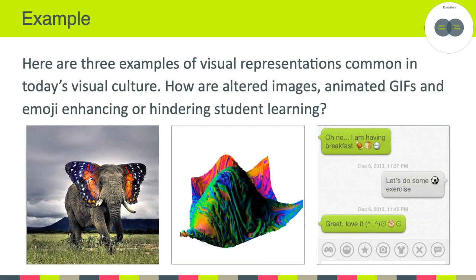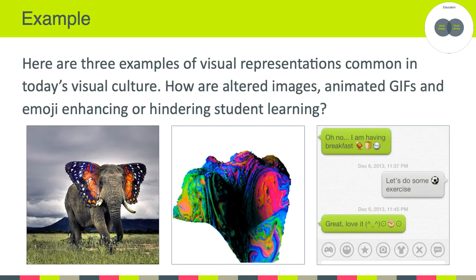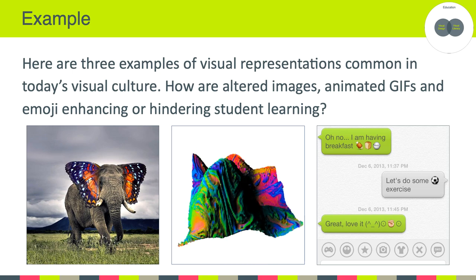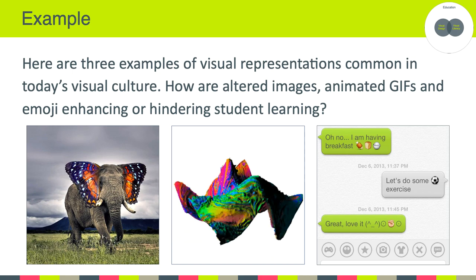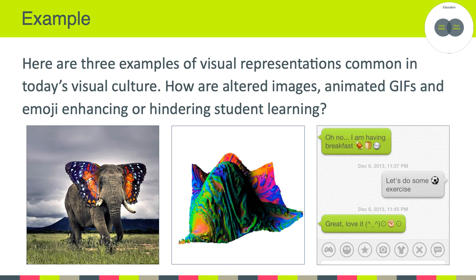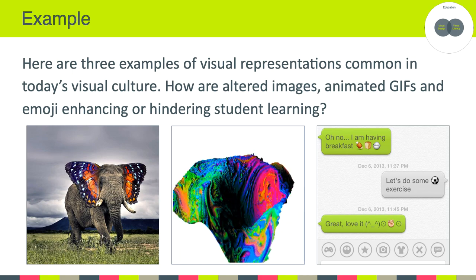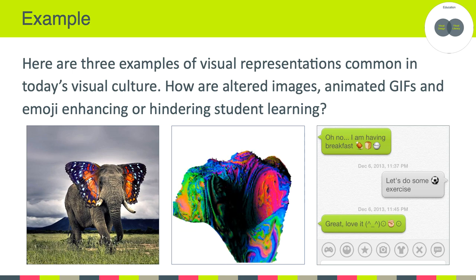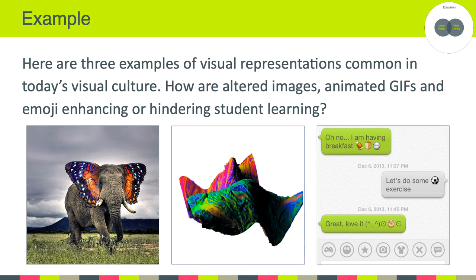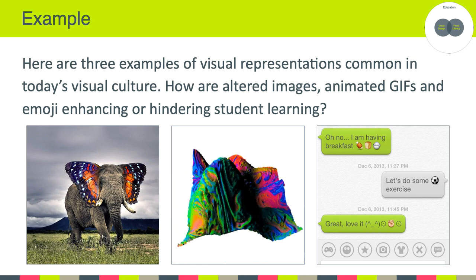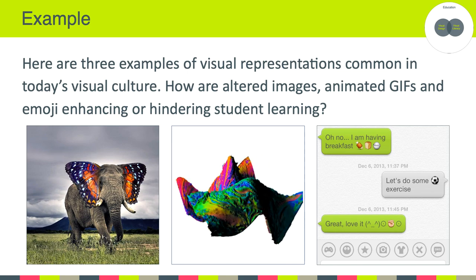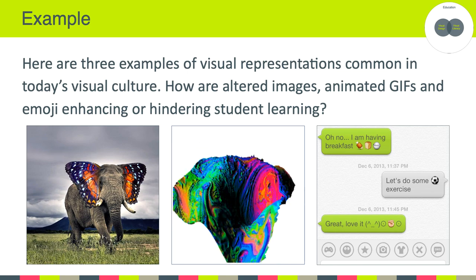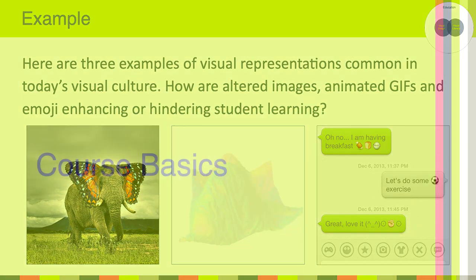For a final example, here are three visual representations common in today's visual culture. As you look at these, the question is: within the context of education, how are altered images, animated GIFs, and emoji enhancing or hindering student learning? At a minimum, we have to say that these types of visual representations are changing our approach to teaching and learning. One of our responsibilities is to understand how we can support learners in a world that is this visual.